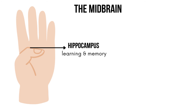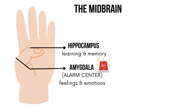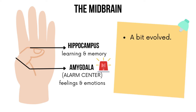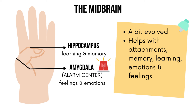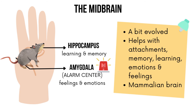The second part is the amygdala, represented by the second knuckle, and it's mainly responsible for emotions and feelings. Our midbrain is a bit more evolved compared to the reptilian brain because it helps us go beyond just survival — it helps us form attachments, store memory, learn new things, and experience emotions and feelings. We call this the mammalian part of the brain, or the rat brain.